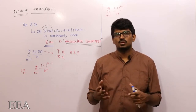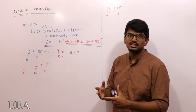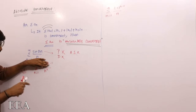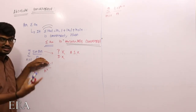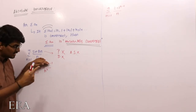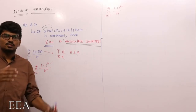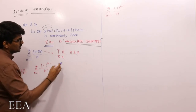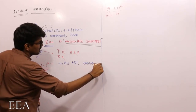Consider summation from n=1 to infinity of (-1)^(n-1) / n². This is an alternating series. Let us first try the alternating series test (AST). If I remove (-1)^(n-1), the term is 1/n². Taking the limit as n→∞, 1/n² goes to zero. Since the limit is zero, I cannot conclude divergence, so I go to the second step: is 1/n² decreasing? Yes, it is decreasing. Both conditions are satisfied — the limit reaches zero and the term is decreasing — so by AST, this series is convergent.